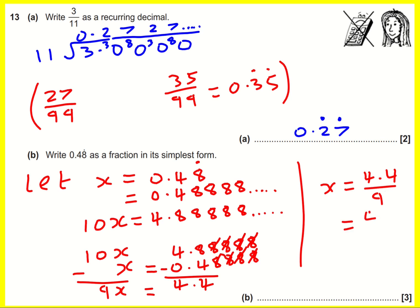We're nearly there — it's asked for simplest form. First, multiply top and bottom by 10 to get rid of the decimal, giving 44 over 90. Then cancel down: there's a common factor of 2, giving 22 over 45. So that's the topic of recurring decimals — going from a fraction to a recurring decimal, and from a recurring decimal back to a fraction.